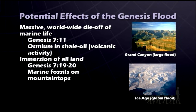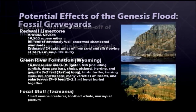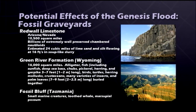We see other evidence associated with the global flood. We see a worldwide die-off of marine life and a lot of evidence for volcanic activity as implied in Genesis 7:11. For example, we see osmium in shale oil. This volcanic activity not only would have been warming the oceans but also explains the fountains of the great deep and why marine fossils are in the lower layers of the fossil record. Immersion of all land is talked about in Genesis 7:19-20 — and sure enough, we see marine fossils on top of mountains. We see fossil graveyards: the Red Wall Limestone, the Green River Formation in Wyoming, Fossil Bluff in Tasmania — huge agglomerations of fossils covering vast, dense areas all over the world, very consistent with the global flood.